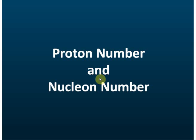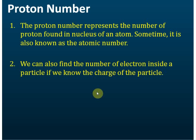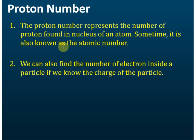Proton number and nucleon number. The proton number represents the number of protons found in the nucleus of an atom. The number of protons determines the type of atom, and therefore the proton number is also known as the atomic number. However, in SPM we always use proton number, not atomic number.